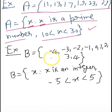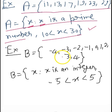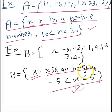Let's take another example. Set B has the elements -4, -3, -2, -1, 0, 1, 2, 3, and 4 — these are all integers. In rule method or set builder form, we write it as: {x : x is an integer and -5 < x < 5}. We prefer this form when there are many values and they all share a common property or pattern.